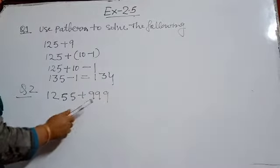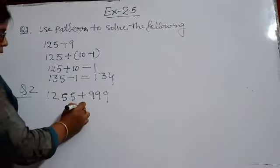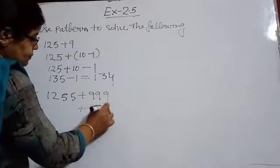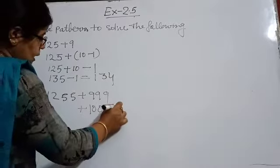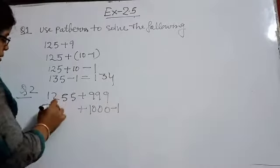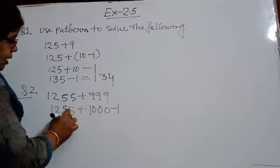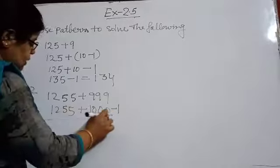For question number 2, we have 1255 plus 999. We can write 999 as 1000 minus 1. And here we have 1255. Now add these two parts first.